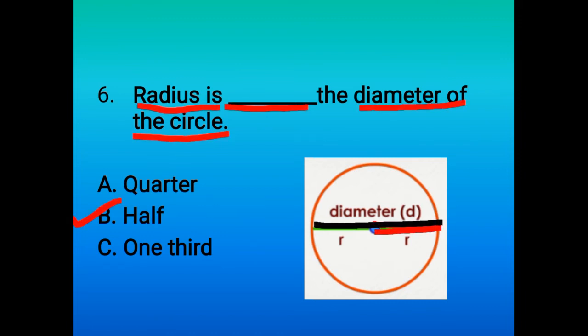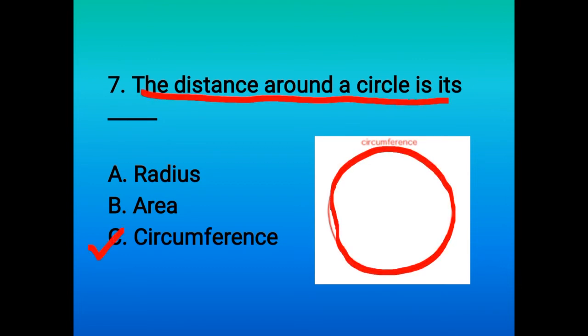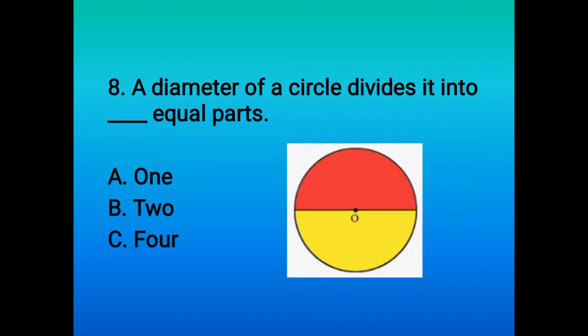Seventh question: the distance around a circle is its dash. We know that the distance around the circle is called its circumference, so C is the correct option here.